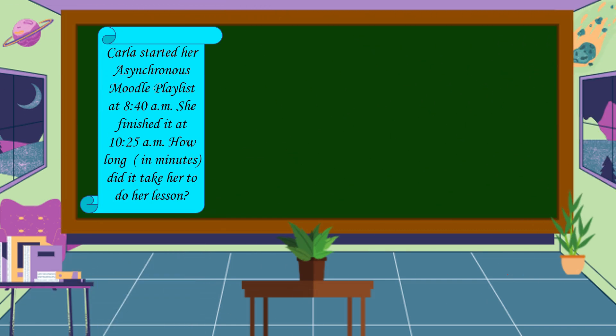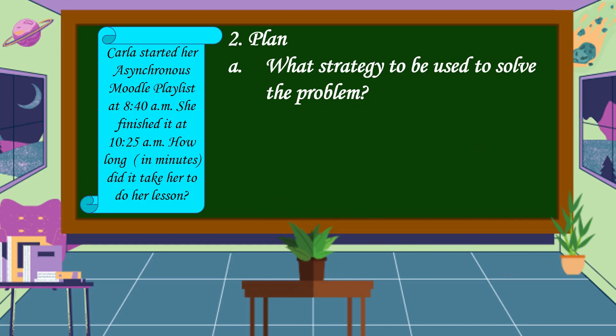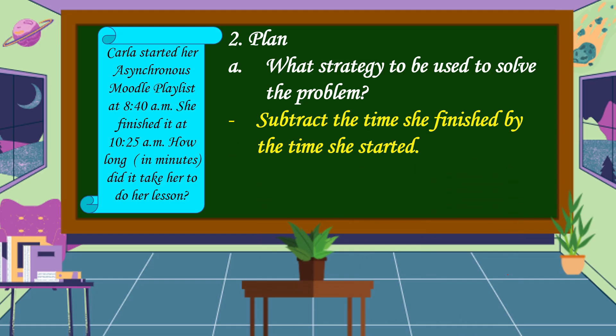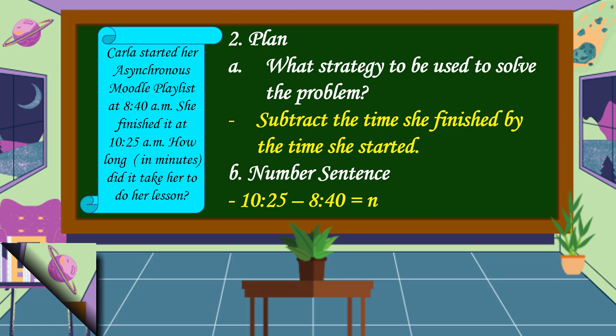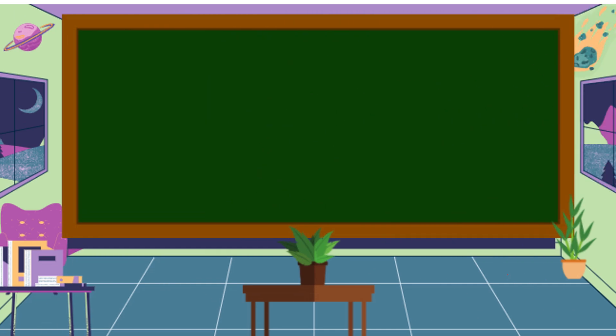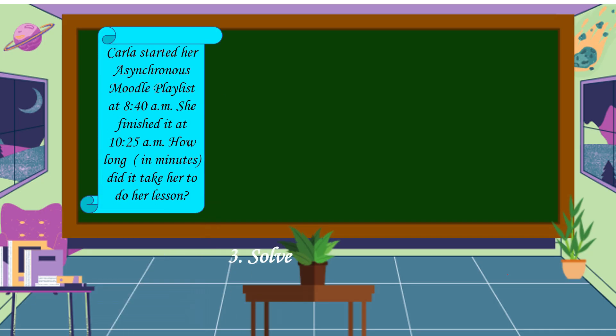After we understand the problem, the next step is we're going to formulate a plan. What strategy is to be used to solve the problem? In this problem, we're going to subtract the time she finished by the time she started. The number sentence is 10:25 minus 8:40 is equal to N.